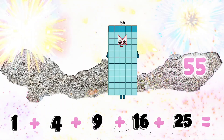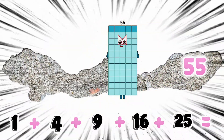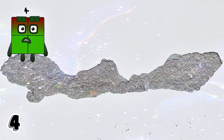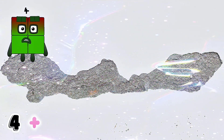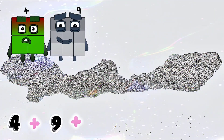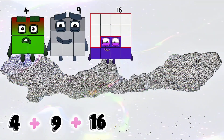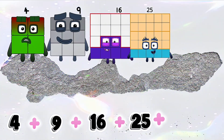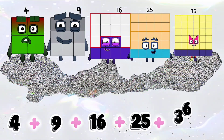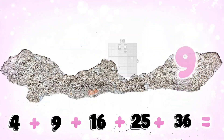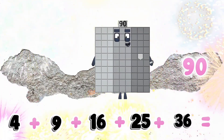4 plus 9 plus 16 plus 25 plus 36 equals 90.